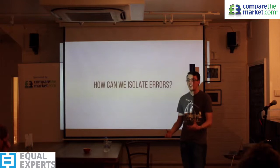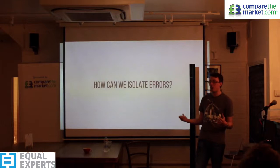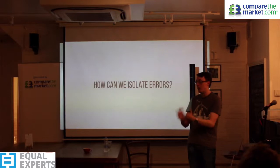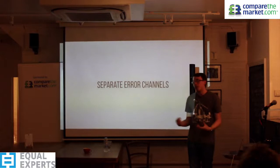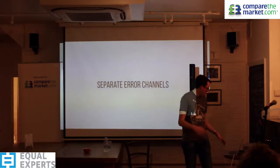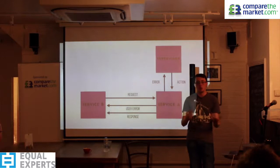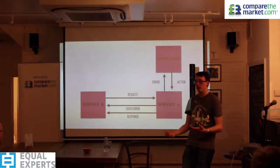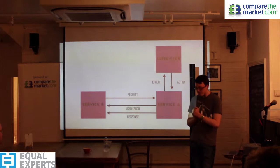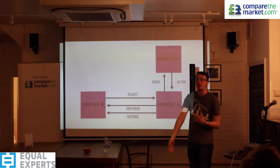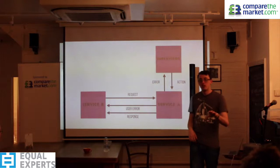How do we isolate errors? When dealing with services, we get two types of errors: something simple like 'you entered the wrong email,' or something complex like 'I can't talk to the database.' What we do is separate our error channels. Service B communicates with Service A, which has a supervisor attached to it — Linux users may be familiar with supervisors, sometimes called systemd nowadays.